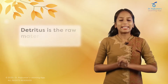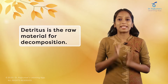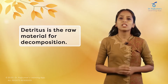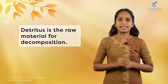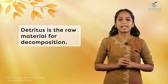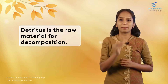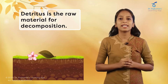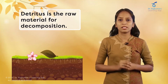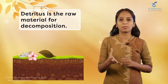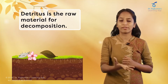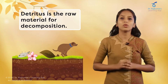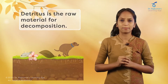Detritus is the major basic raw material for decomposition. What is detritus? Detritus is nothing but the remains or dead or decayed plants, leaves, or flowers. In the case of animals, the decayed animals or remains of animals — including the fecal matter — we also call that detritus.